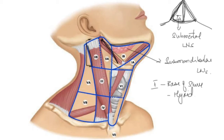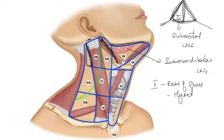There are lymph nodes underneath the sternocleidomastoid muscle as well. Level 2 is divided into 2A and 2B by the spinal accessory nerve — marking it here in green. The spinal accessory nerve runs in this manner through the neck in the superior part. Level 2A is medial or anterior to the nerve, and Level 2B is posterior to the nerve.